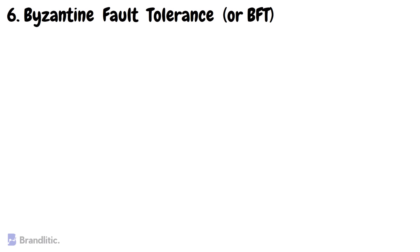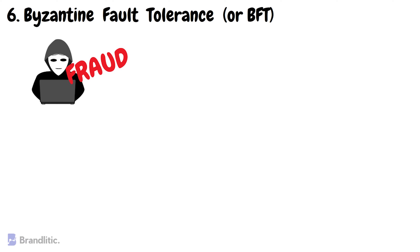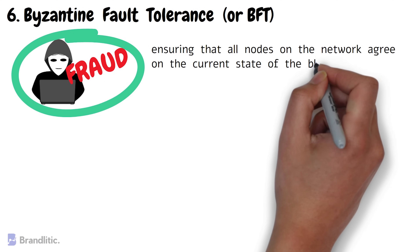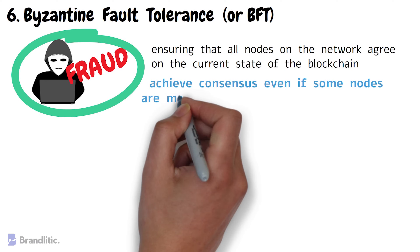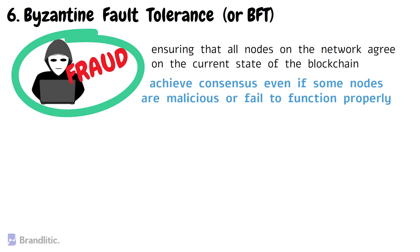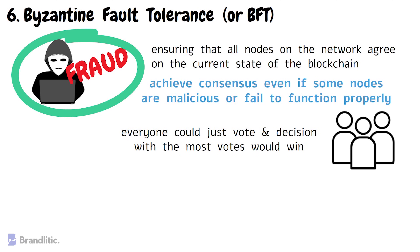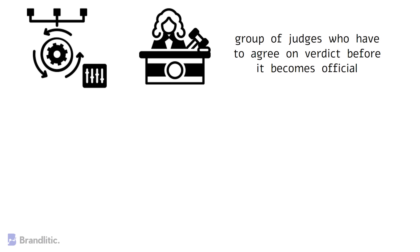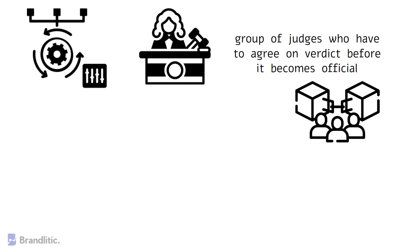Number six: Byzantine Fault Tolerance, or BFT. We must have heard of situations where malicious actors have hijacked the control of the network to commit fraud. BFT is a consensus algorithm fundamentally designed to tolerate such malicious actors in a network by ensuring that all nodes agree on the current state of the blockchain. The primary goal of BFT is to achieve consensus even if some nodes are malicious or fail to function properly. Think of it like a group of people trying to make a decision together — in a BFT system, some people might be lying or giving fake information, so BFT uses a system of checks and balances that requires multiple nodes to agree on a decision before it's finalized. This consensus mechanism ensures that all nodes on the network work together to maintain the integrity of the blockchain.